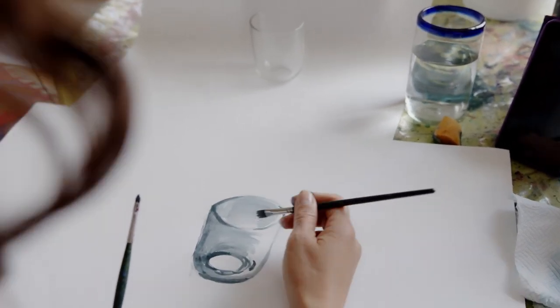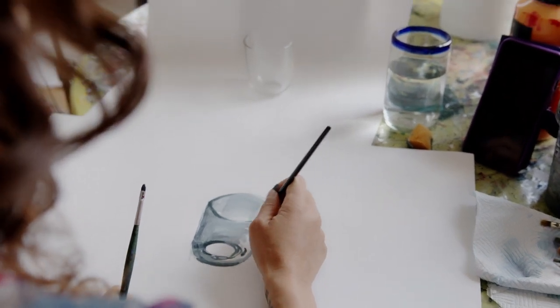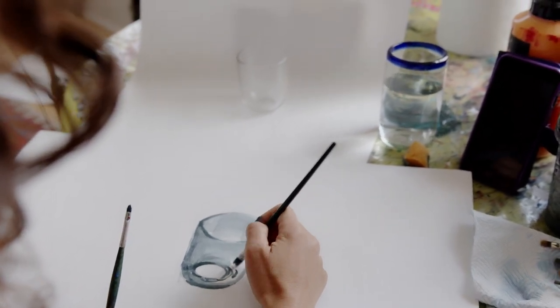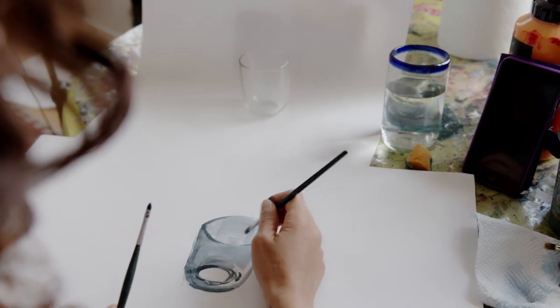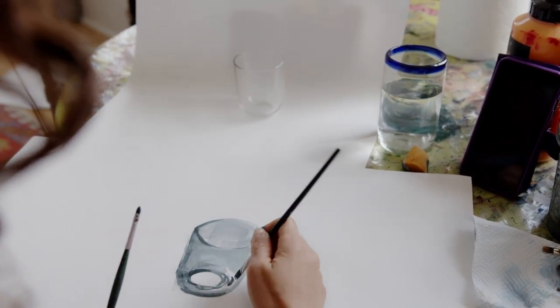So notice how what I'm doing at the moment on the first layers is so much darker than what I'm seeing, and that's because I'm going to be lightening as I go along to hopefully achieve a little more realism. But I don't know how it's going to turn out.